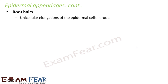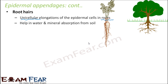Root hairs are unicellular elongations of the epidermal cells in roots. Two important points to note: they are in roots, and they are unicellular — made up of a single cell. For a big tree, you can see small hair-like structures on these kinds of roots. These are nothing but root hairs. Their purpose is to help in water and mineral absorption from the soil.